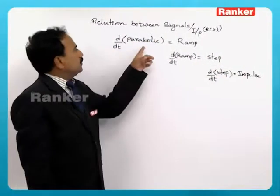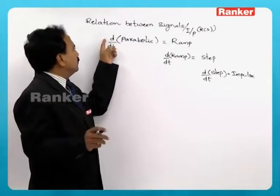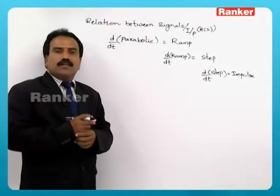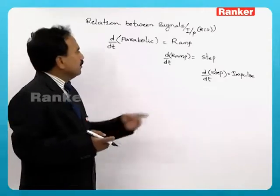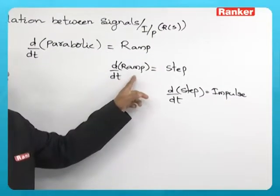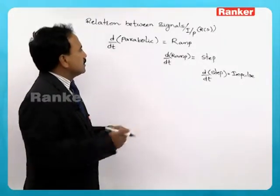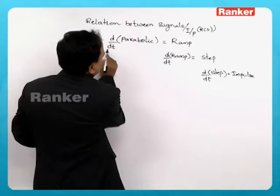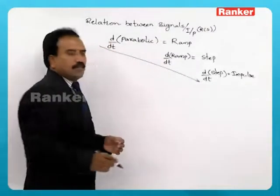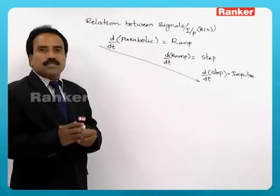This is the way: if you know the response for a parabolic input, then differentiate it and you will get the response for ramp. If you know the ramp response, differentiate it and you will get the step response. That way, there exists a relation between all the four signals — differentiate again and you get the impulse response.